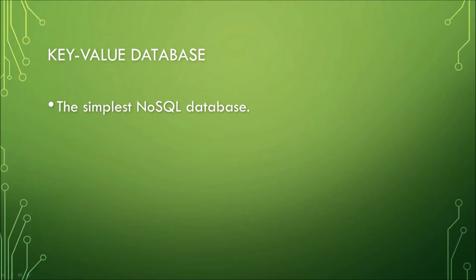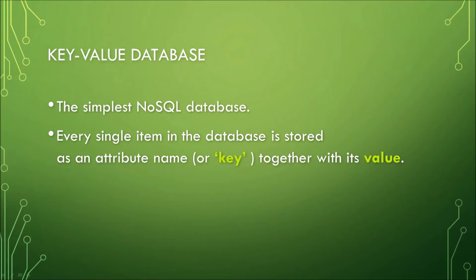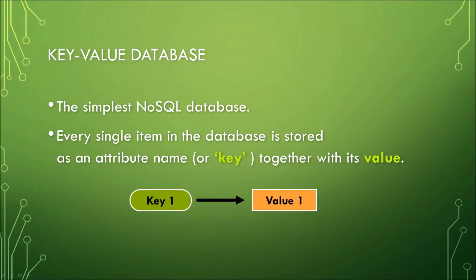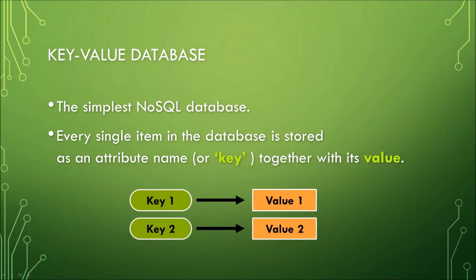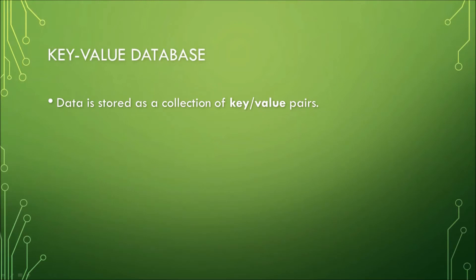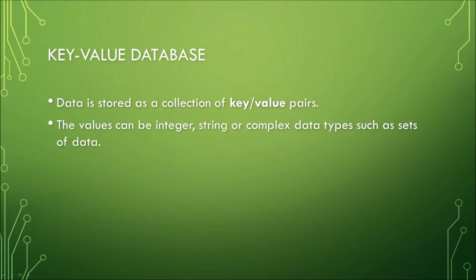The key-value database is the simplest NoSQL database, wherein every single item in this database is stored as an attribute name or key together with its value. So there's a key and you will get a matching value. A key-value database's data is stored as a collection of key-value pairs, as emphasized earlier.